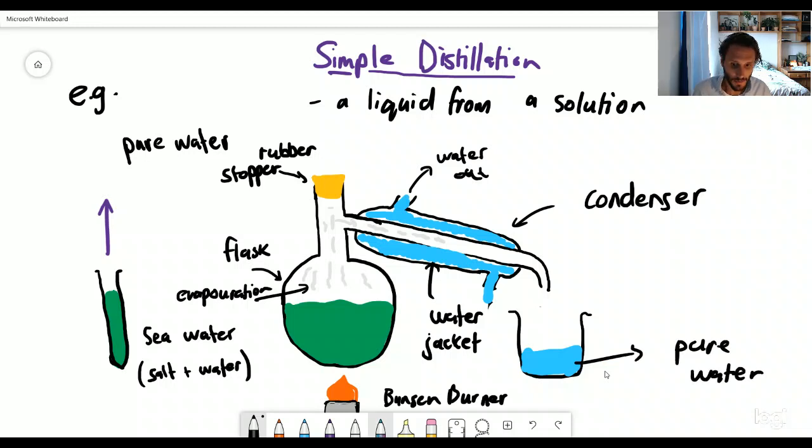And eventually, what's going to happen is, this seawater is going to get lower, lower, and lower, and lower. And eventually, right at the bottom of this flask, we are going to collect a whole bunch of salt crystals. So that is simple distillation. I hope it's been helpful, and see you next time.